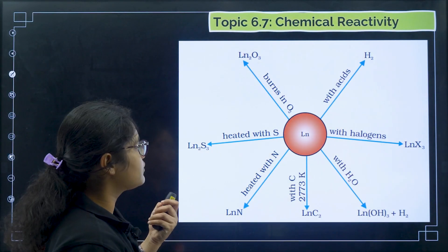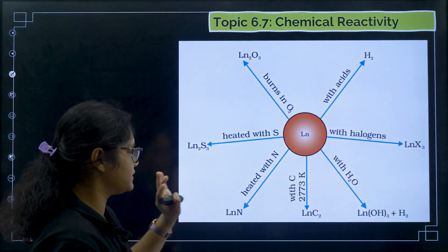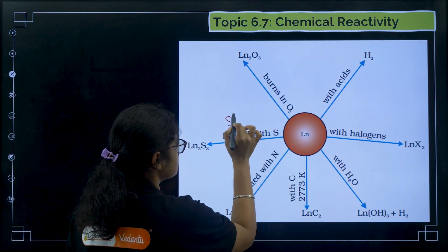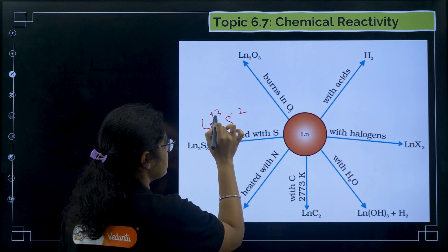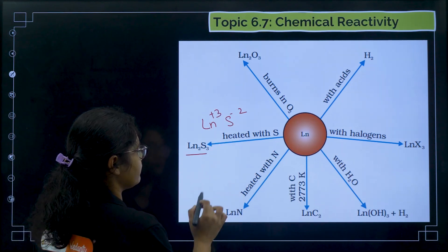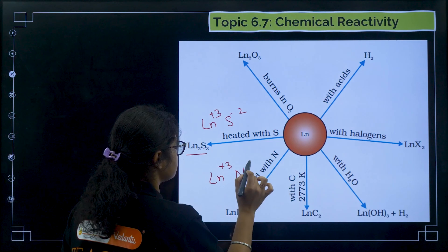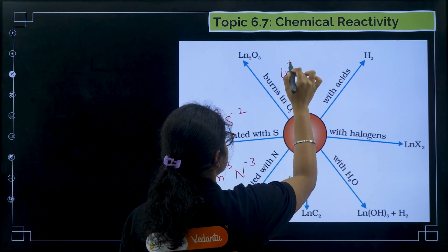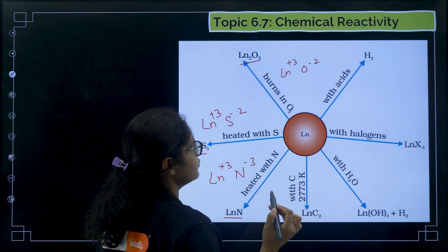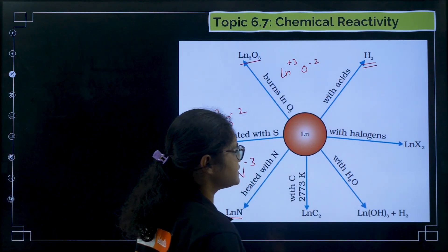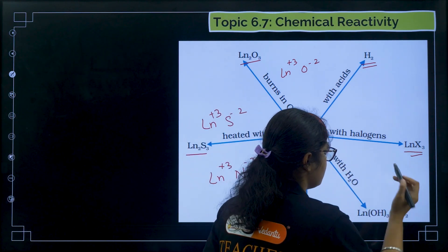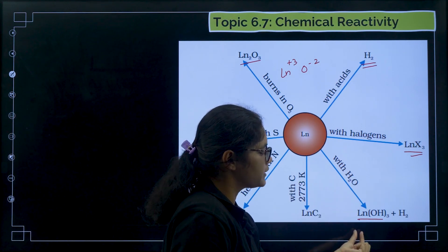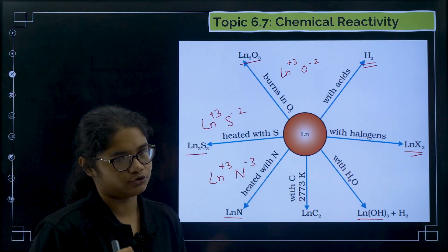For chemical reactivity, questions are generally not asked very often, but here are the key reactions. Lanthanides react with sulfur (sulfur is −2, lanthanide is +3) to give Ln₂S₃. With nitrogen (−3), they form LnN. With oxygen (−2), they give Ln₂O₃. They react with acids releasing H⁺. With halogens they give LnX₃. With water, since they form basic oxides, they give lanthanide hydroxides.